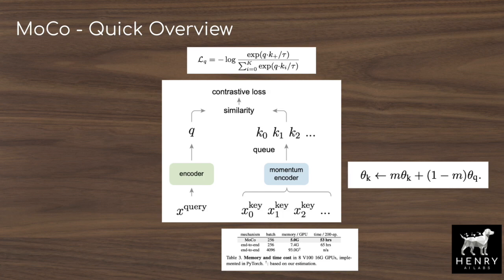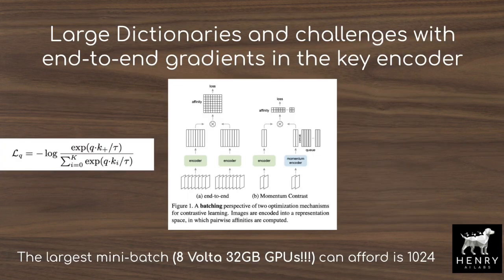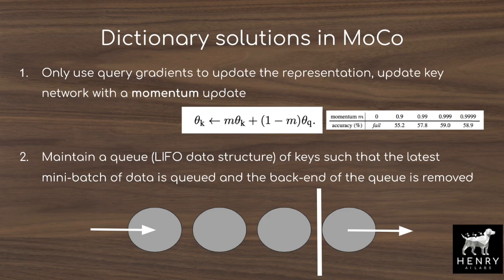An end-to-end approach would use a neural network to encode the query and a neural network to encode the keys, taking the gradient through each the query encoding network and the key encoding network. This is highly memory inefficient, and MoCo shows that you only need to pass the gradients through the query encoder. The key encoder is updated by adding a momentum update of the query encoder's parameters. Images are mapped into low-dimensional key representations and kept in a queue, with a last-in-first-out structure putting the most recently encoded batch on top, popping out old key encodings.